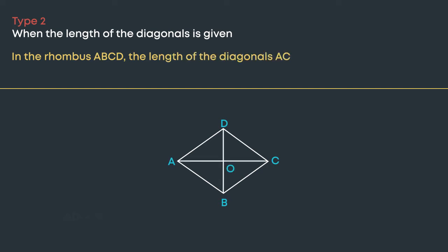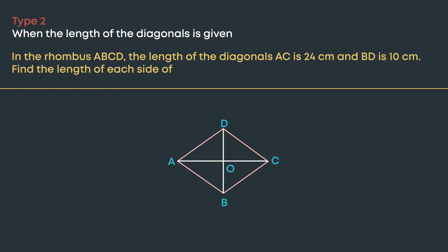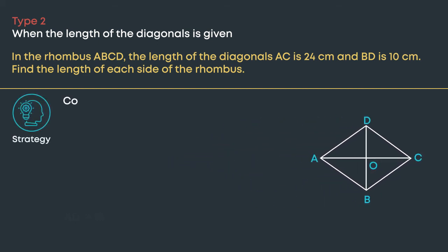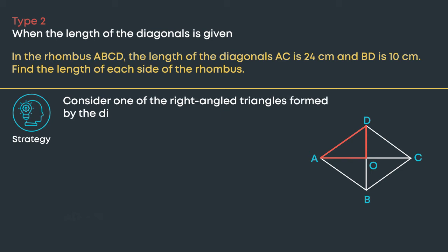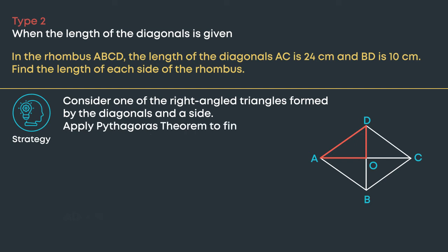Let us take a look at the second type of question. In the rhombus ABCD, the length of diagonal AC is 24 centimeters and BD is 10 centimeters. Find the length of each side of the rhombus. The strategy is to consider one of the right-angled triangles formed by the diagonals and one side of the rhombus, and apply Pythagoras theorem to find the length of the side.